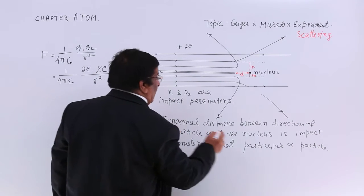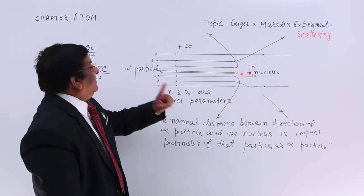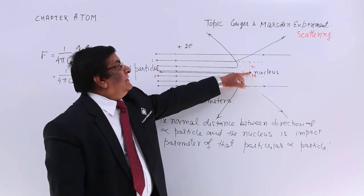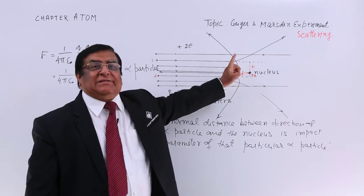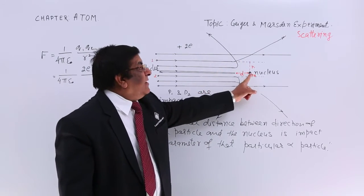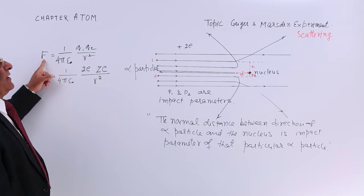So, here we can write what is impact parameter? This is impact parameter. Now, this is done, now we come to another alpha particle which is going just in the straight line, in the line of nucleus as if it is going to hit it. The moment the distance becomes less, the force becomes high, very high.